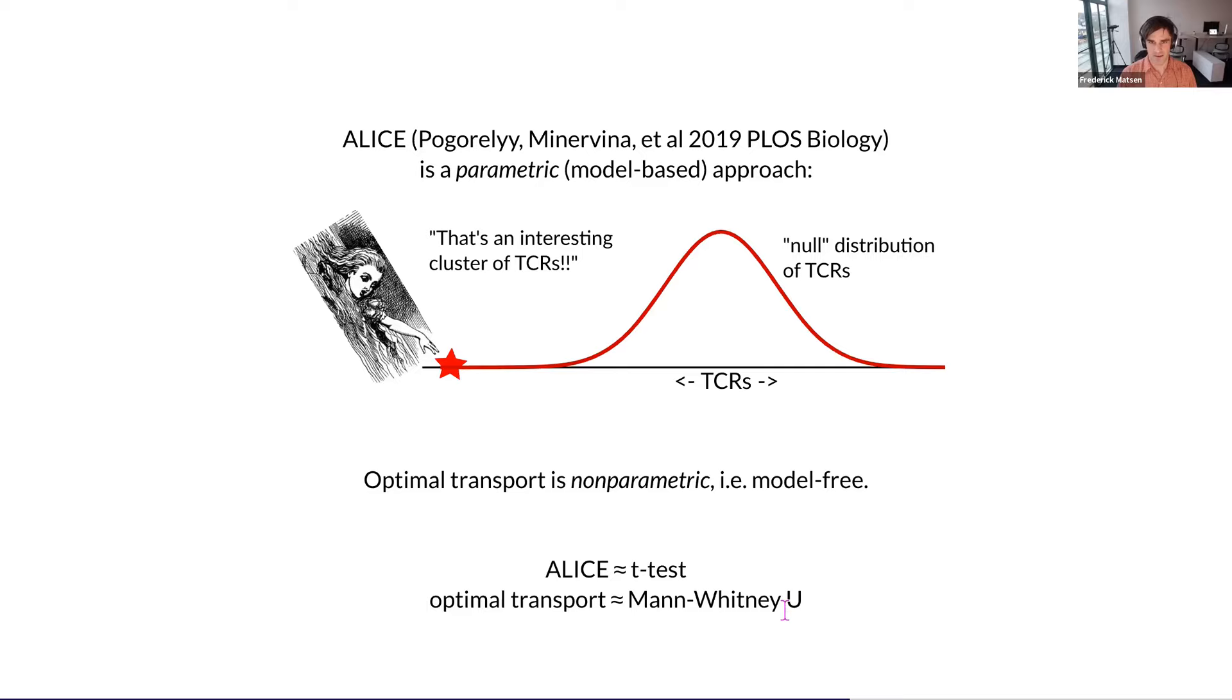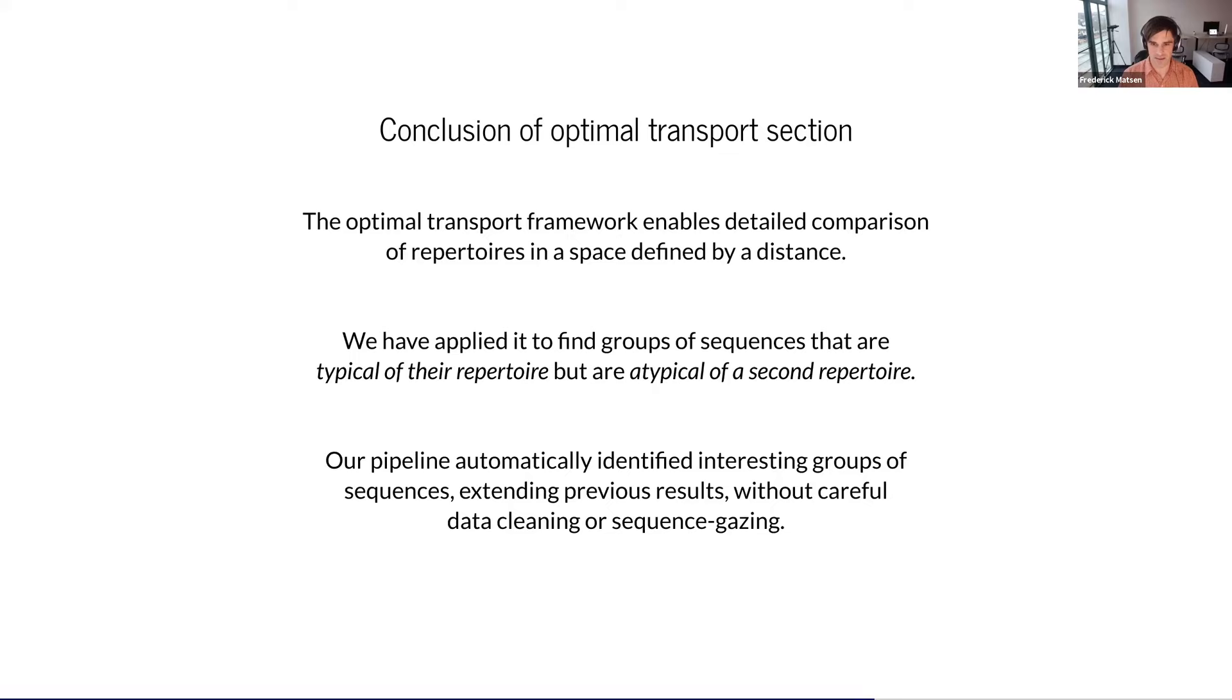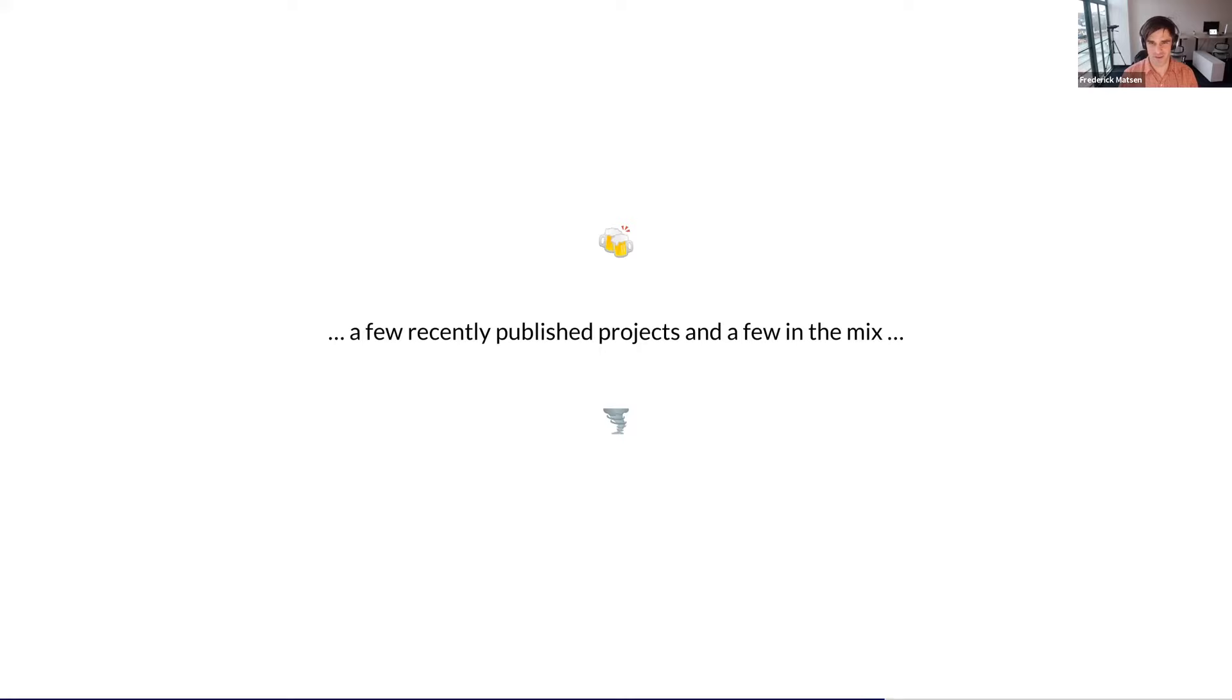So just to conclude this part, the optimal transport framework enables detailed comparison of repertoires in a space defined by a distance. We applied it to find groups of sequences that are typical of their repertoire, but atypical of a second repertoire. We found interesting groups of sequences extending previous results without careful data cleaning or sequence gazing. This is sort of just the beginning. If it seems like this is leading in an interesting way, I think there's lots of other ways that we could use these optimal transport matrices. Let's shift gears and imagine we're going out for beers. This will be somewhere between a whirlwind and going out for beers. Beers in a tornado. Because I don't have a whole lot of time and I wanted to cover a couple different things.